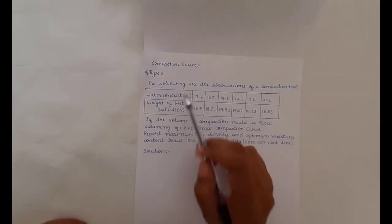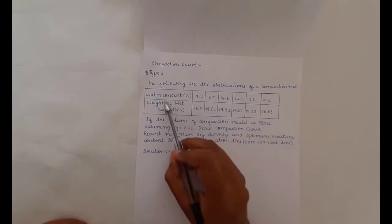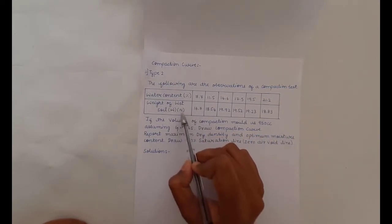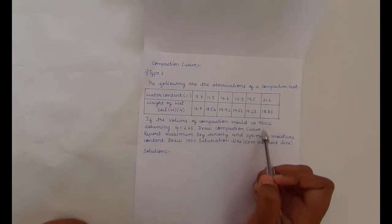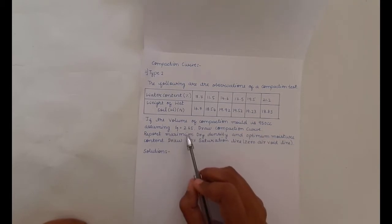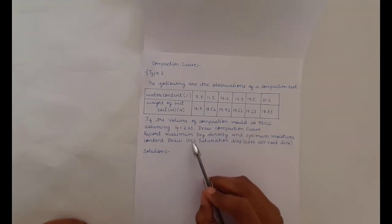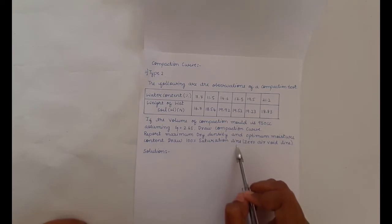The problem is: the following are the observations of the compaction test, wherein the given data is water content and the weight of the wet soil in Newton. They have also given the volume of the compaction mould as 950 cc, assuming specific gravity G as 2.64. We need to draw the compaction curve, calculate the maximum dry density and the optimum moisture content, and also draw the 100% saturation line.